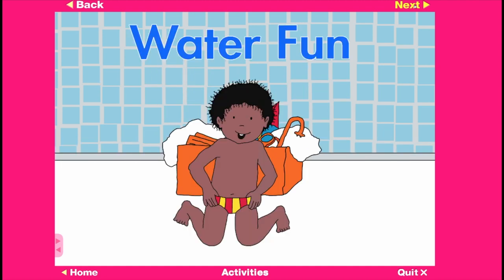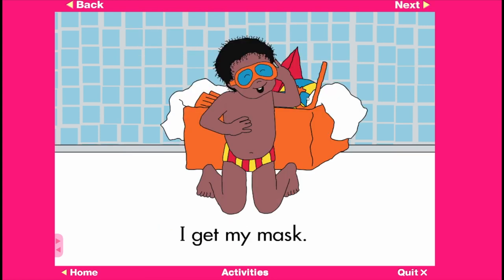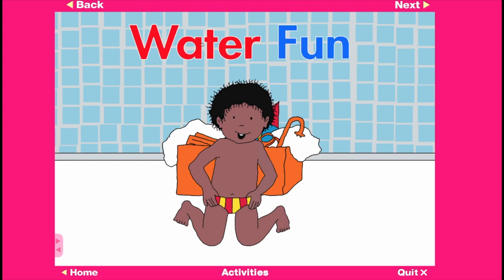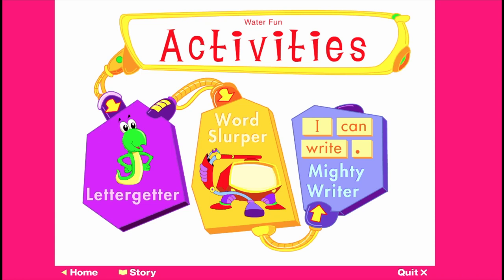Now you can read the story for yourself. For help, click on a word. After the supported read, students can read the text for themselves at their own pace. They can click on any word to hear it again. Each title is followed by interactive activities that focus on a range of related skills.